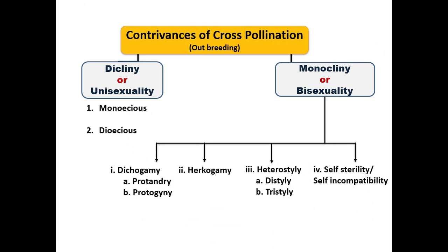Contrivances of cross-pollination, or outbreeding devices, are mechanisms adapted by plants to promote cross-pollination. Dicliny or unisexuality includes monoecious and dioecious types. Monocliny or bisexuality includes four mechanisms: dichogamy, herkogamy, heterostyly, and self-sterility or self-incompatibility. Dichogamy has two sub-types — protandry and protogyny — and heterostyly includes distyly and tristyly.